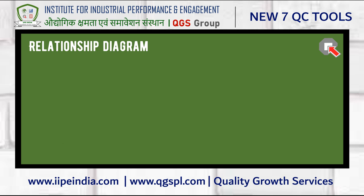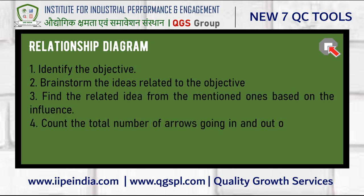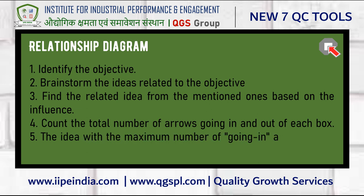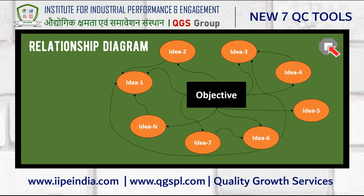There is another way in which the relationship diagram can be made. Identify the objective and try to identify the ideas related to it. Now start with one idea and try to find the related idea from the listed ones based on influence. Repeat this step for all the ideas. Count the total number of arrows going in and out of each box. The idea with the maximum number of incoming arrows is the major cause on which action needs to be taken.